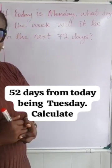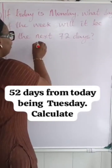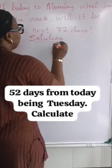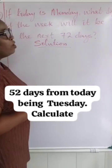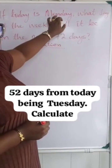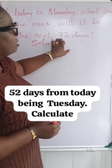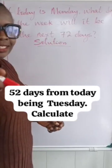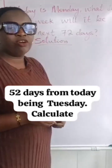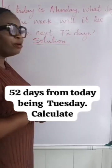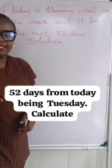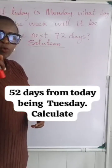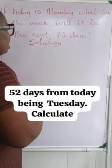Very simple question, right? Now let's look at the solution. We are assuming today to be Monday, and we are looking at after 72 days — what day of the week will it be? Remember, how many days make one week? Seven days, right? So we're working with that seven days.